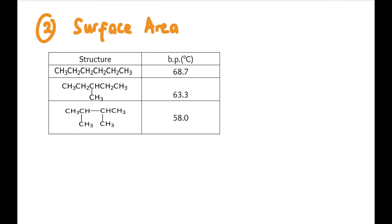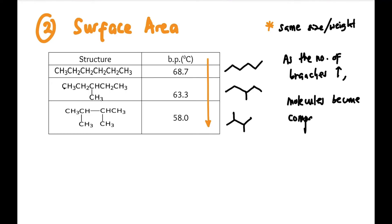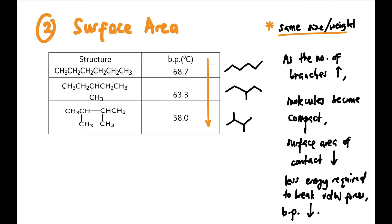The next factor is surface area. If we look here, there are three examples, each with 6 carbons. The first is a linear chain, the second has 5 carbons with one branch in the middle, and the last has two branches. All have the same size with 6 carbons, so their molecular weight is the same. What differentiates them is their surface area. As we go down, there are more branches, and if we notice, the boiling point also decreases. Why? As the number of branches increases, the surface area becomes smaller because branches make molecules more compact. The surface area of contact will decrease, so less energy is required to overcome the van der Waals forces. Because less energy is required, the boiling point also decreases. Remember, this is only applicable when size or weight is the same - only then do you look at surface area.